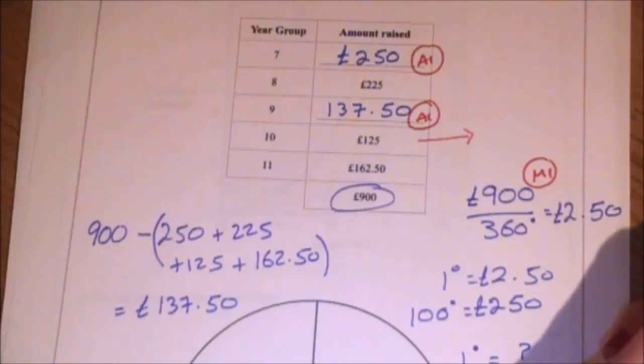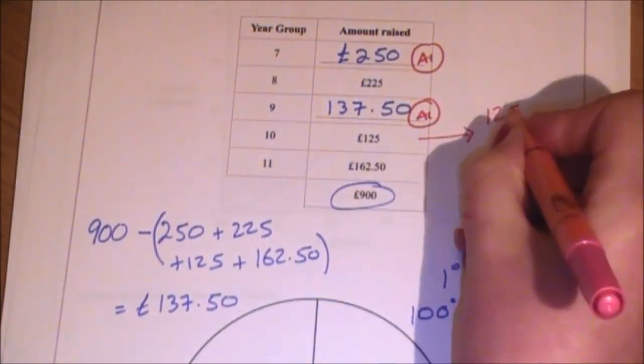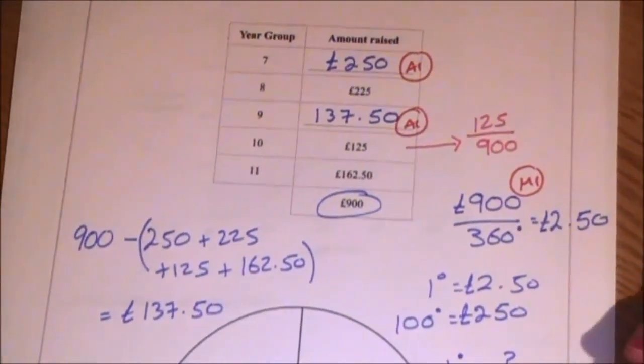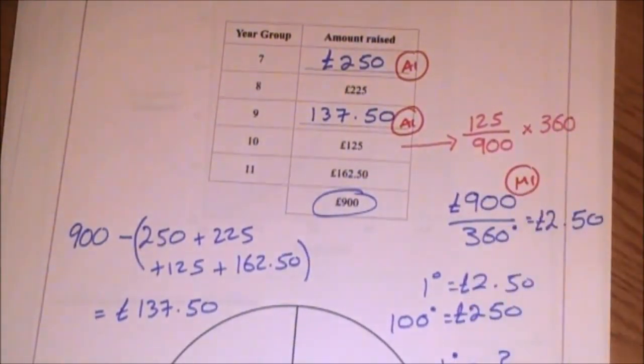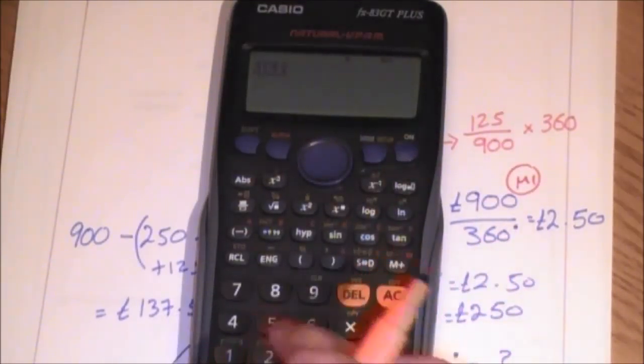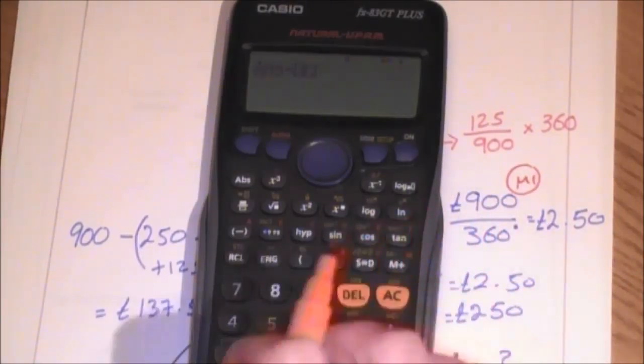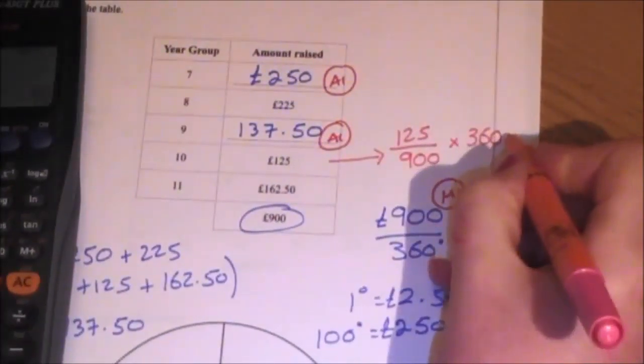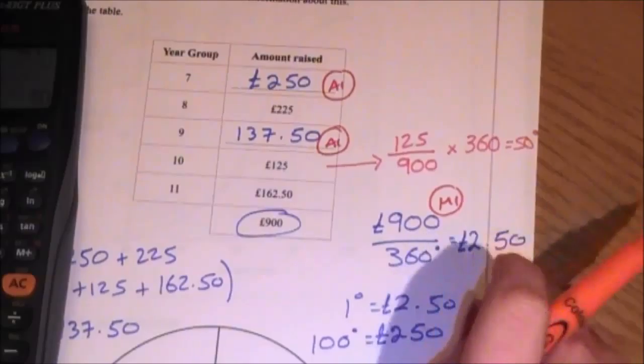If I wanted to put those into the pie chart, I would need to find the £125 out of the total raised, which was 900. Once I've done that, I would then times it by 360. So that would give me 125 out of 900, which is that, times by 360 equals 50. So if I was drawing it, I would draw year 10 to be 50 degrees.